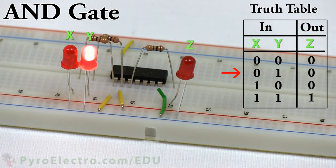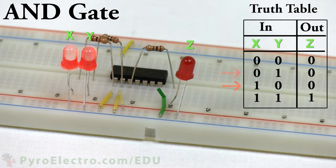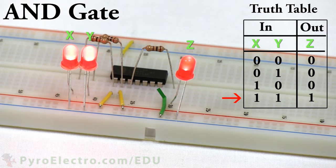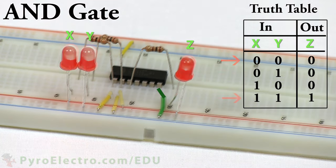When input is 01, output is 0. When input is 10, output is 0. And when input is 11, output is 1. And that is how the AND logic gate works.